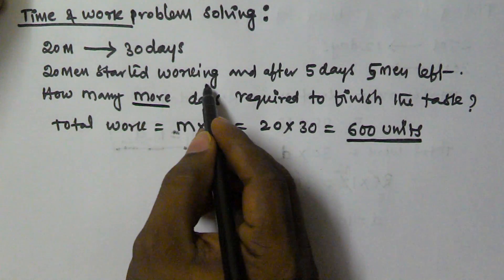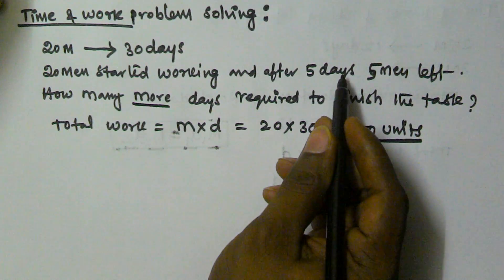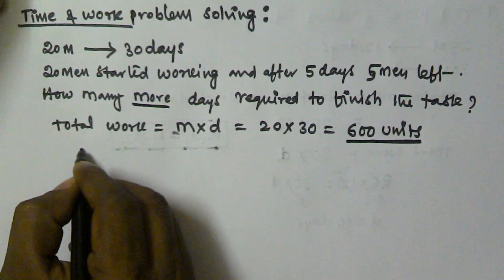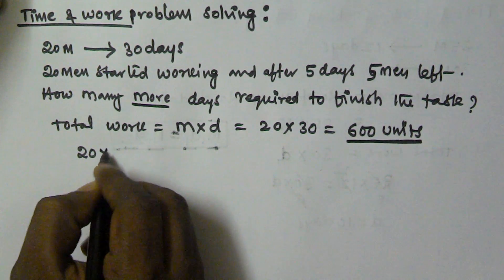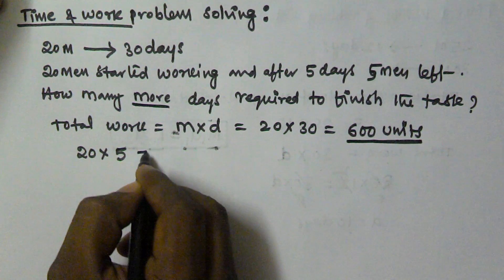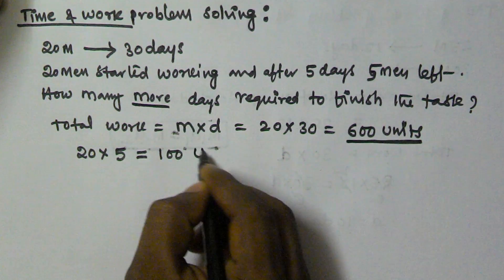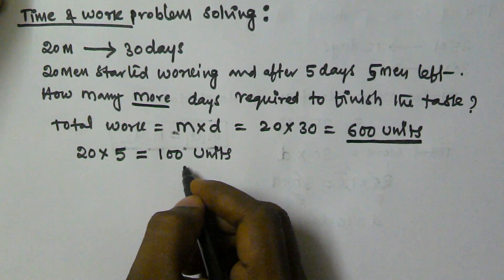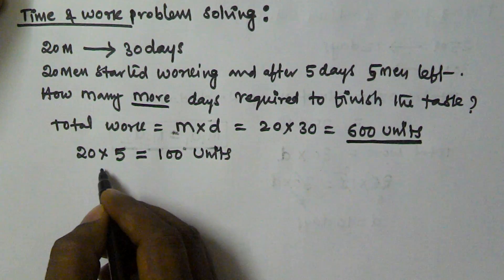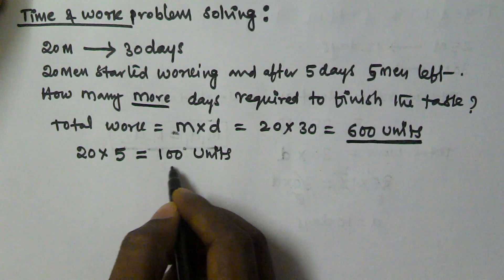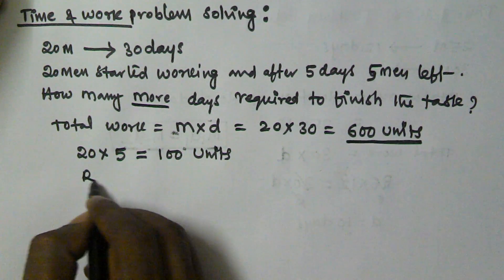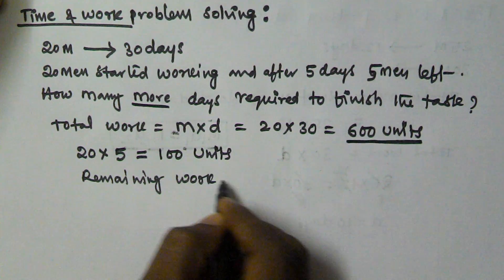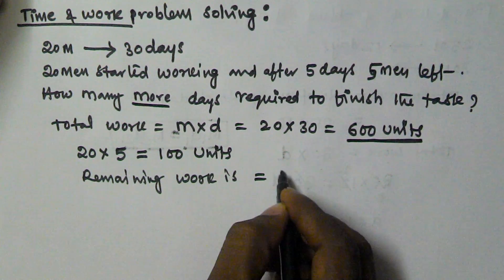But 20 men started working and after 5 days, 5 men left. That means 20 men worked for 5 days, so 20 into 5 is equal to 100. So in the first 5 days, 20 men finished 100 units. That means the remaining work is 500 units.